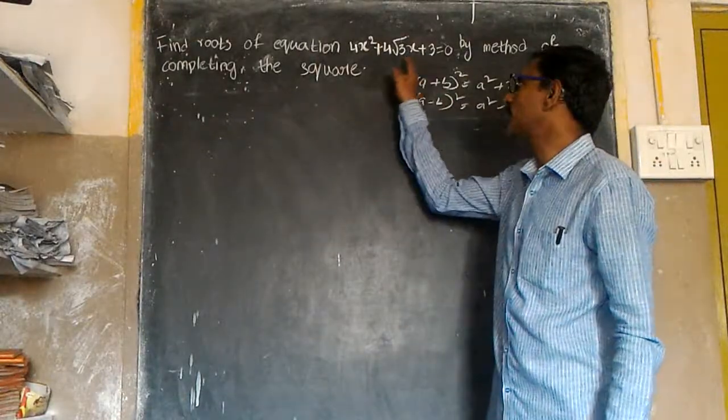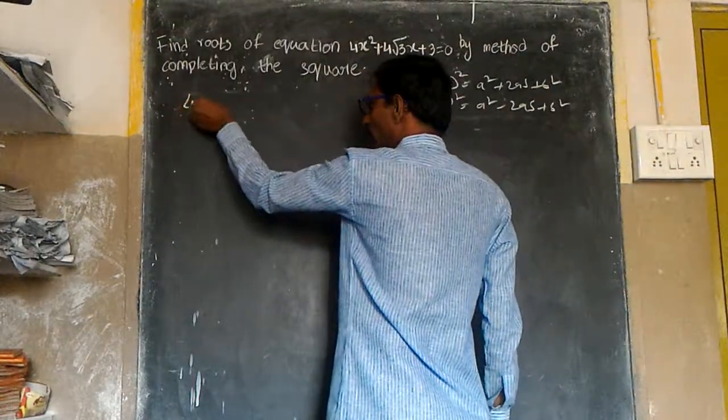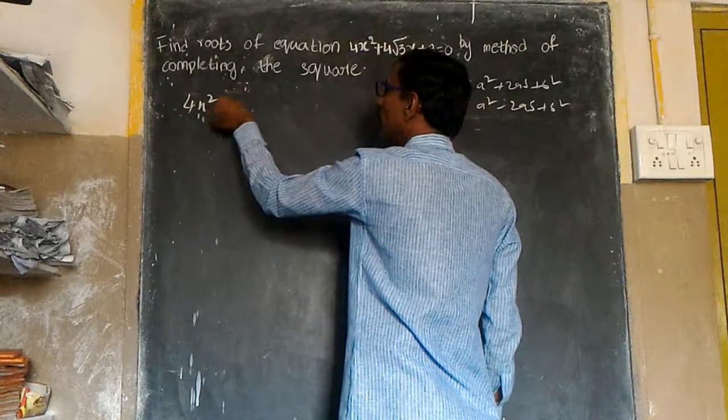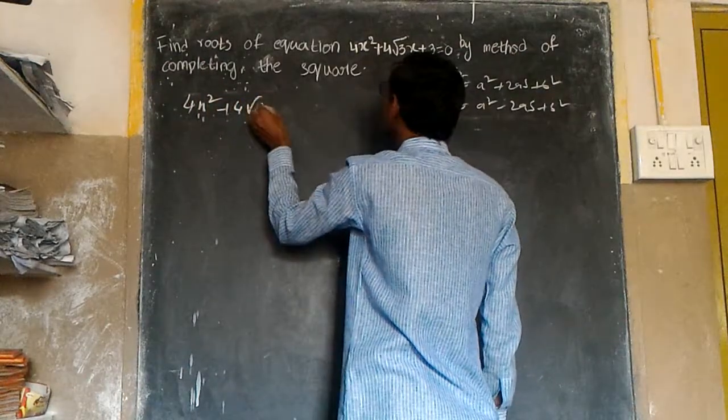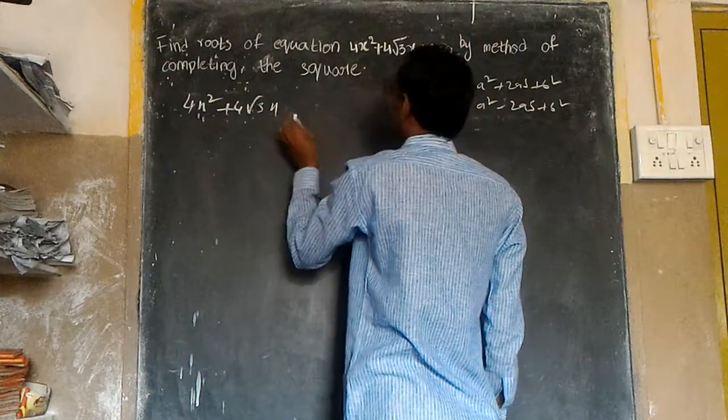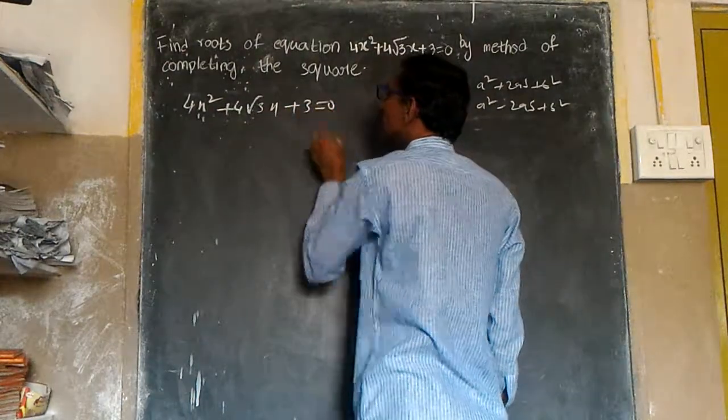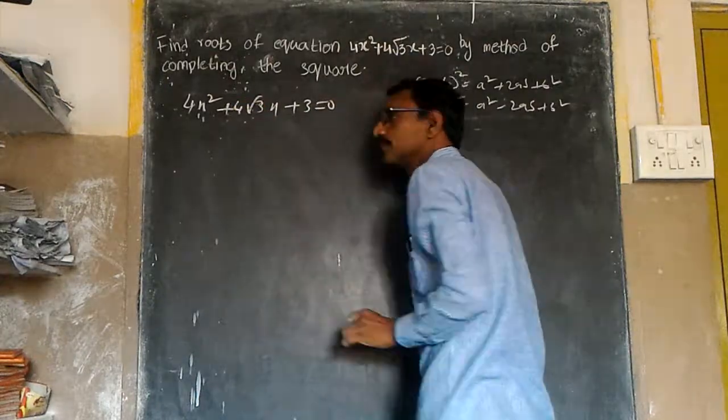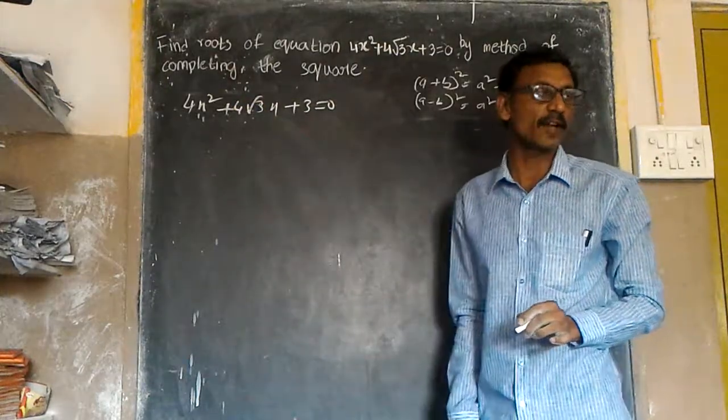First I write the equation: 4x² + 4√3x + 3 = 0. We'll use the completing square method.